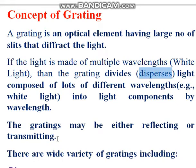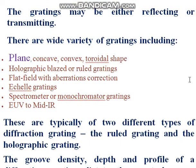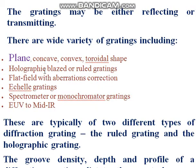Gratings may be either reflecting or transmitting, and there is a wide variety available. For example, plane grating, concave grating, convex grating, and toroidal shape gratings. The plane transmission grating is in our syllabus. The concave grating is much better than the plane transmission grating because no lenses are required, and by increasing the radius of curvature of the concave grating we can manage many things. There are also convex gratings and holographic gratings, which are very precise.